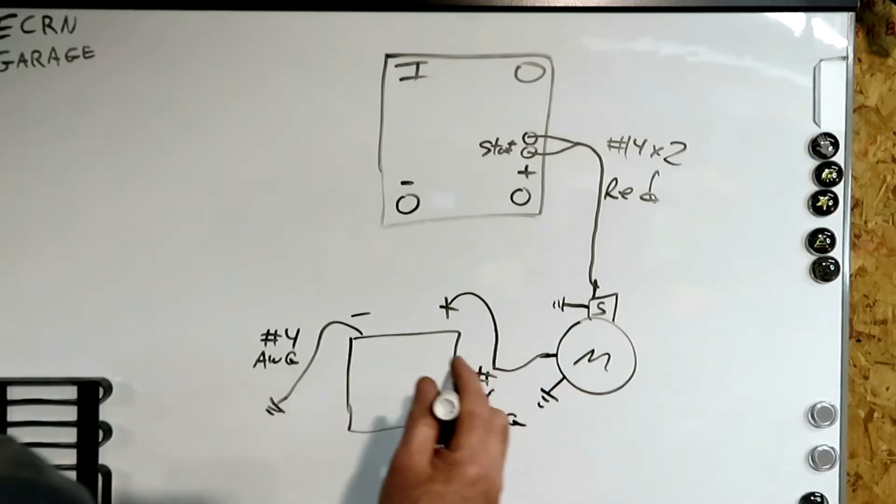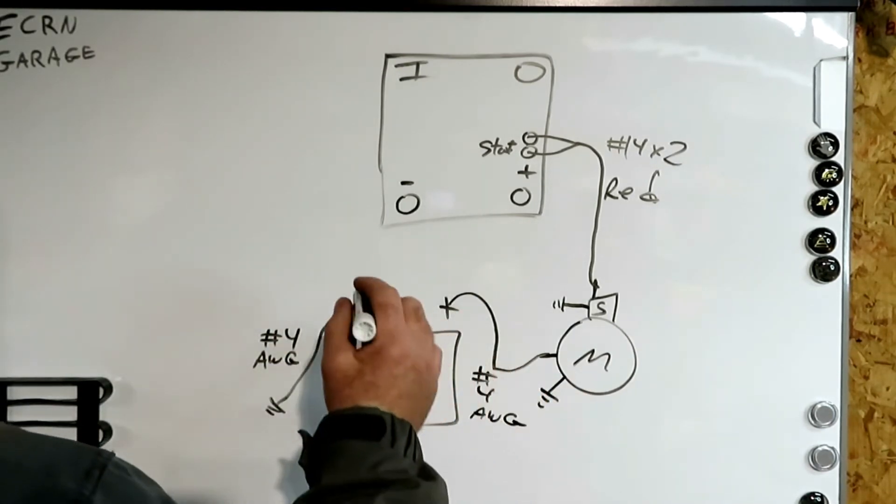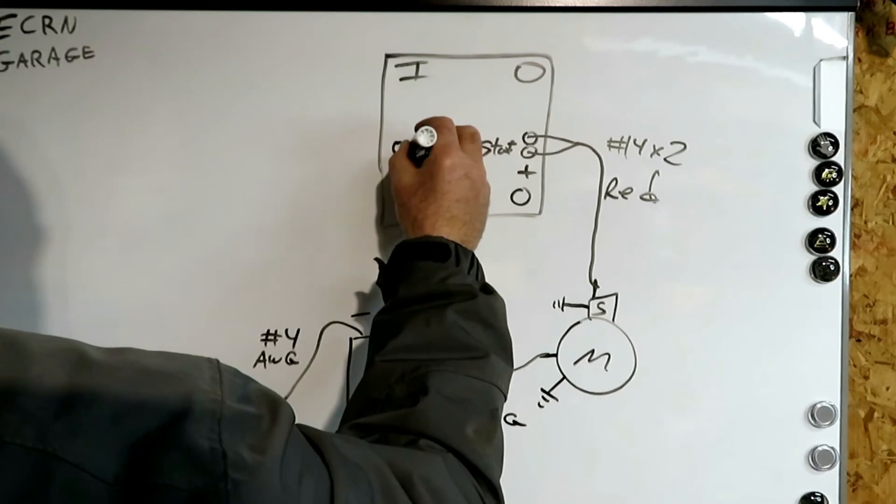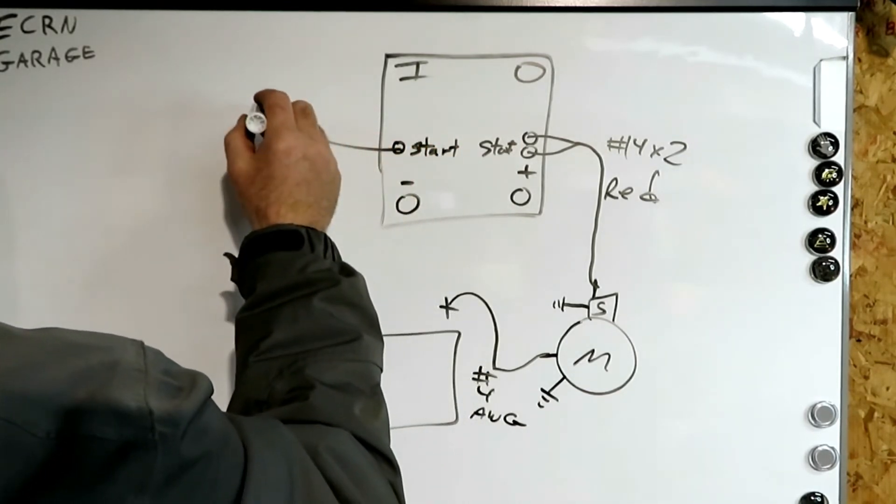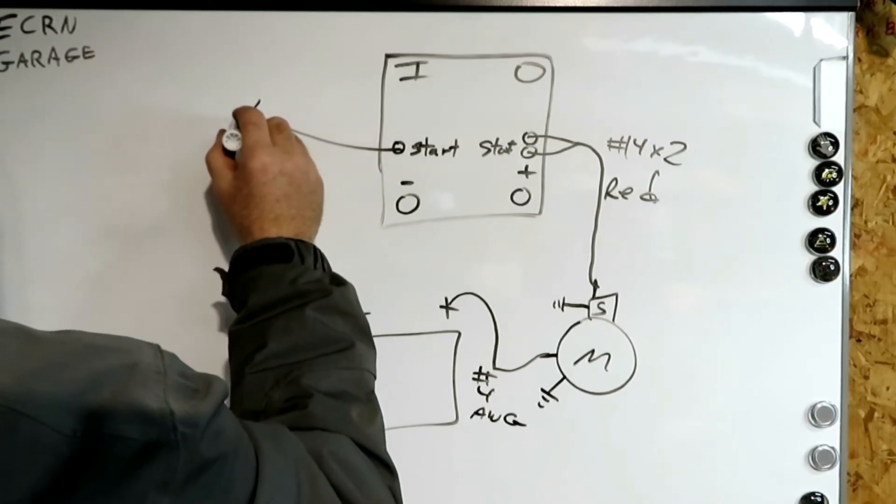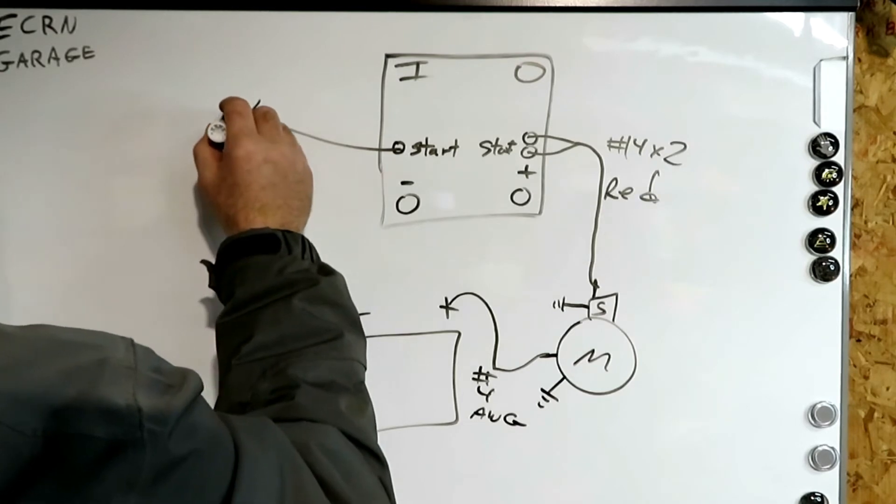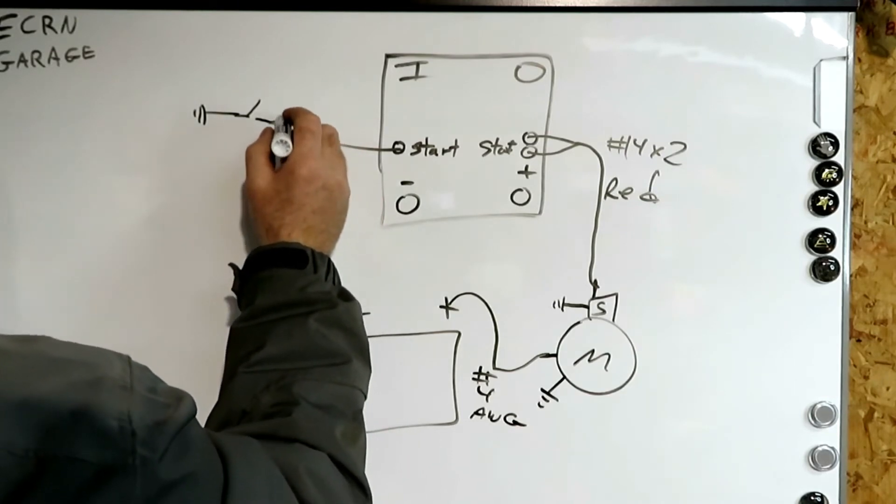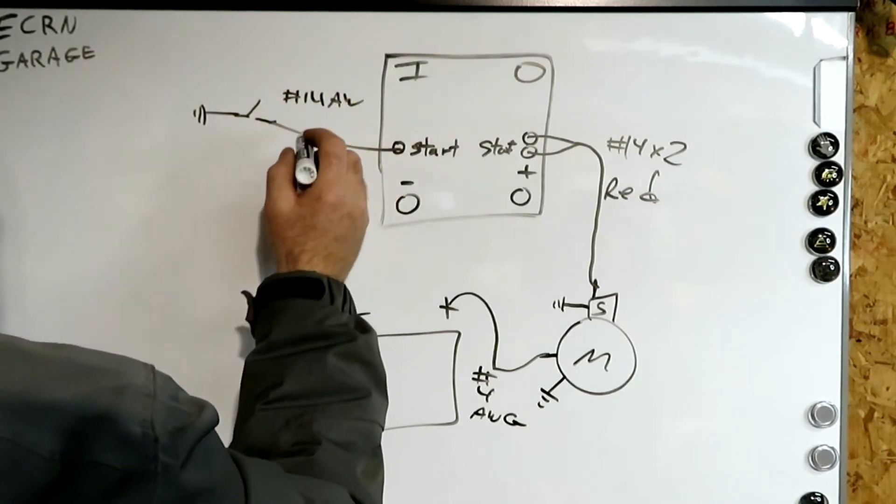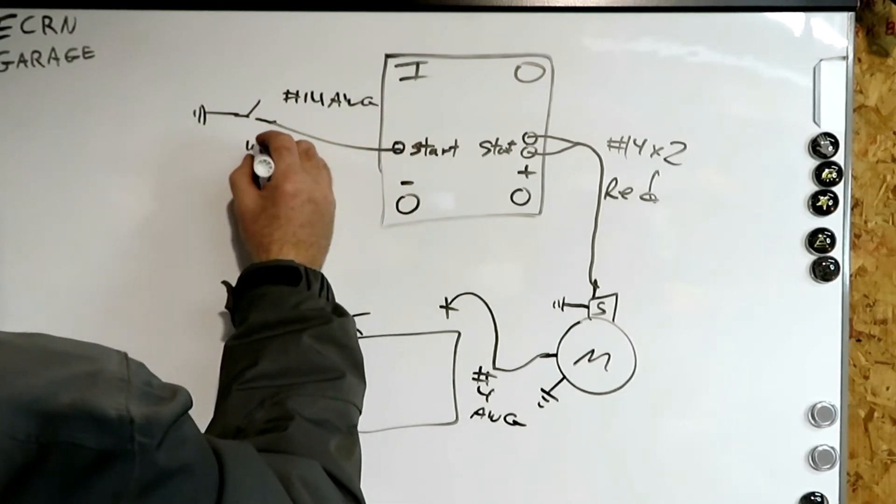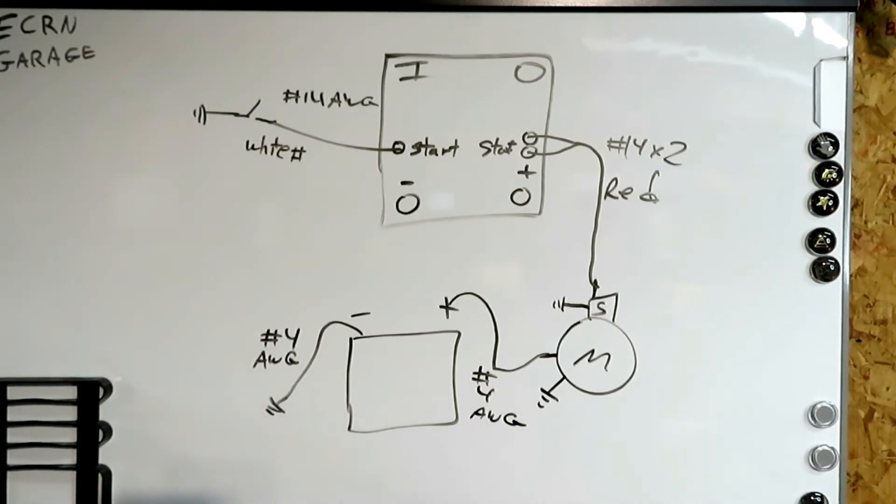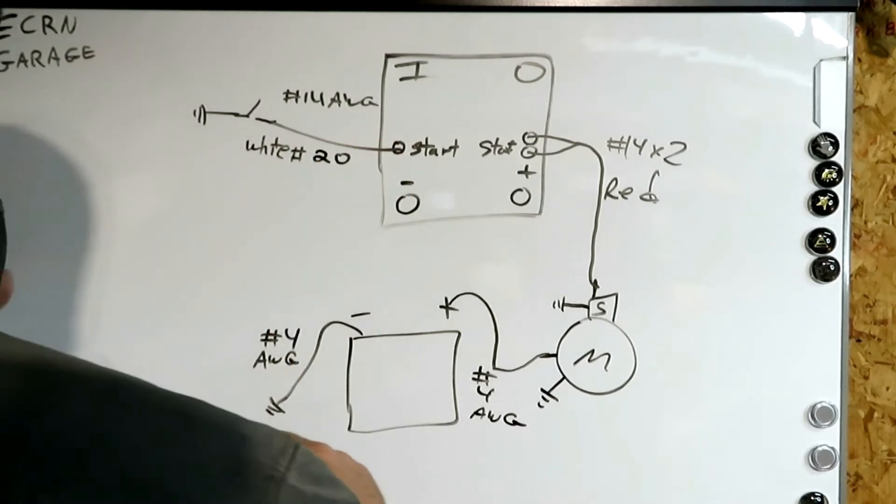Once the power is keyed on from the last part with the ignition, the start button on the input, the start here, and then it goes to a starter switch. And then all the switches go to chassis ground. So this here is a number 14 AWG. And it's a white number 20 in my chart.